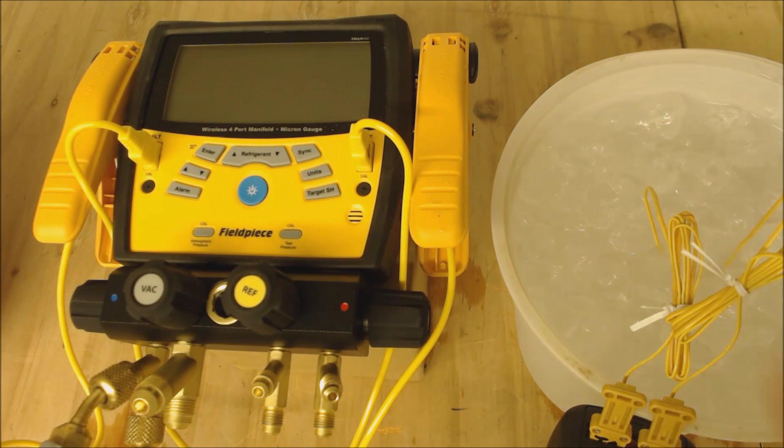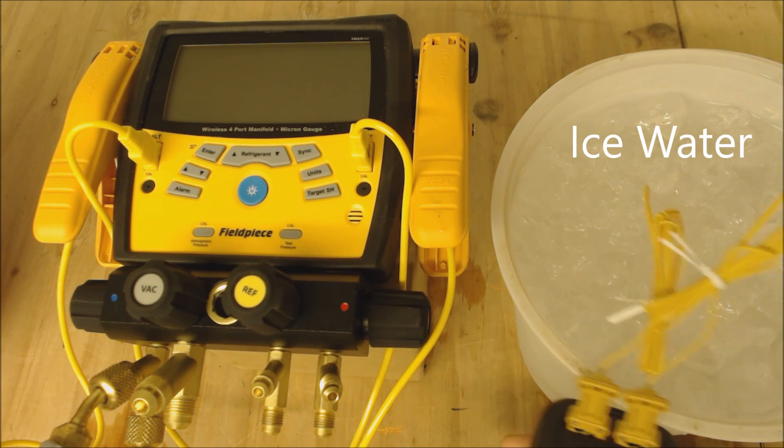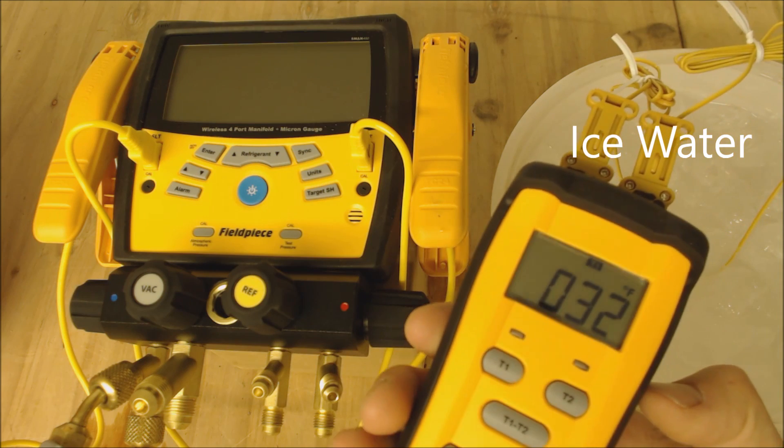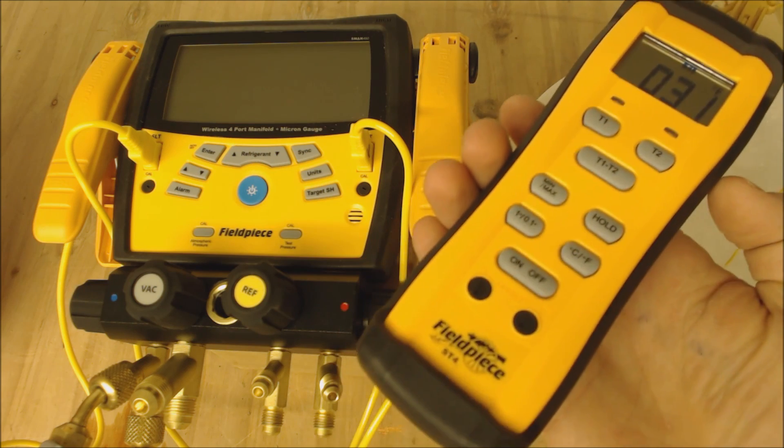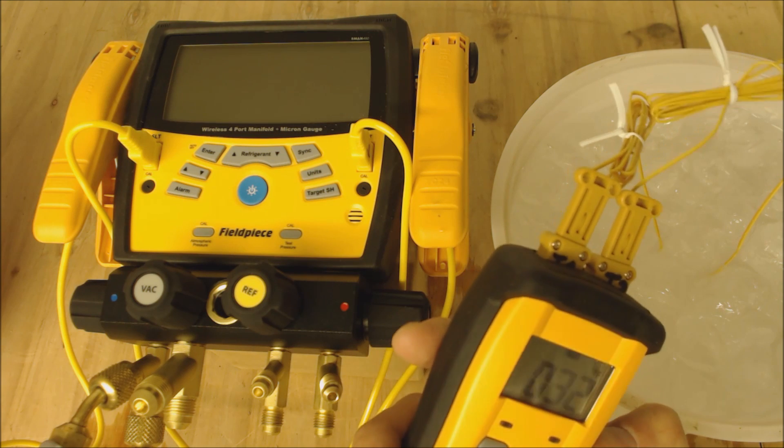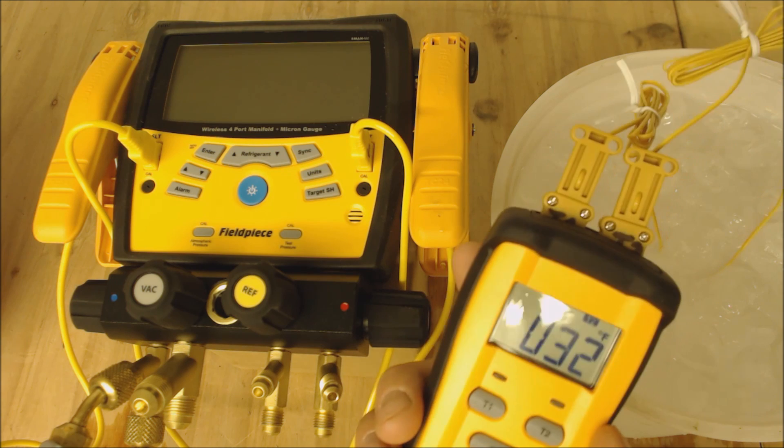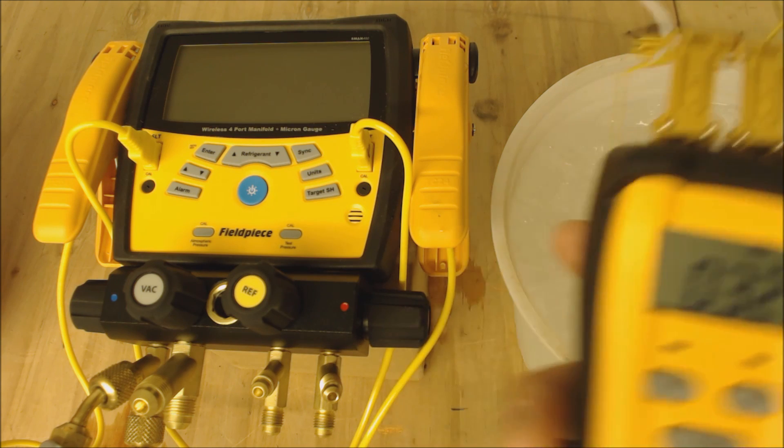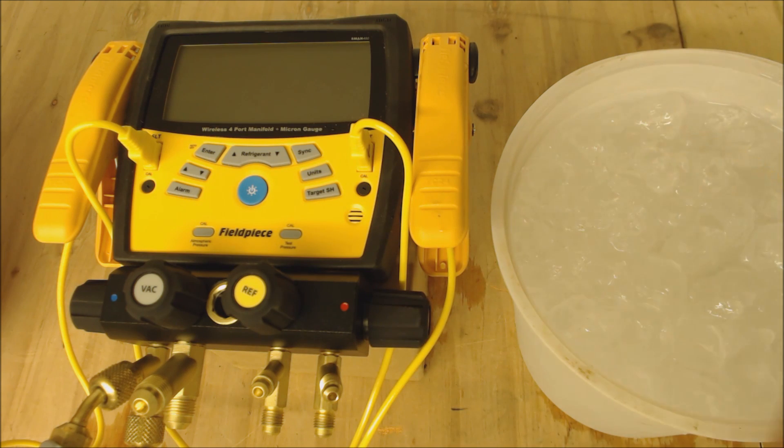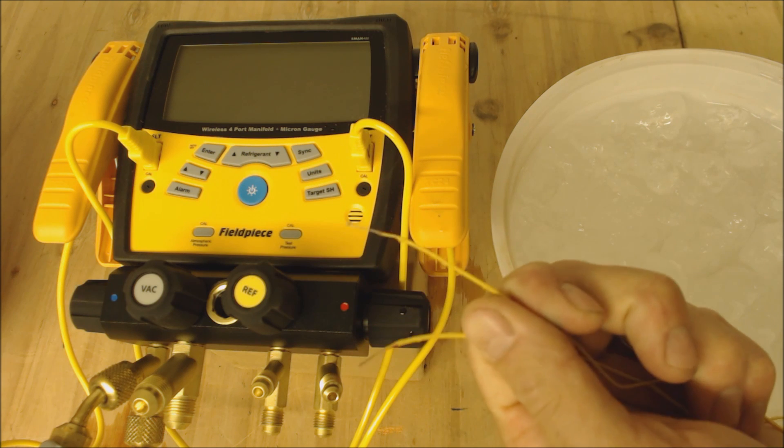The first thing we're going to start with is temperature. We have each of these clamps, a bucket of ice at 32 degrees, and here I have a Fieldpiece ST4. You see that it's 32 degrees on T1, and switching to T2 it says 32 degrees. That's with these small bead type temp sensors.